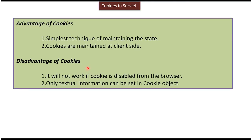The advantages of cookies: it is a simple technique for maintaining the state between the client and server, and cookies are maintained at the client side. Once the browser receives a cookie from the server, the cookie is saved on the client machine. The disadvantages: if we disable cookies in the browser, session tracking will fail. Also, only textual information can be stored in a cookie object.